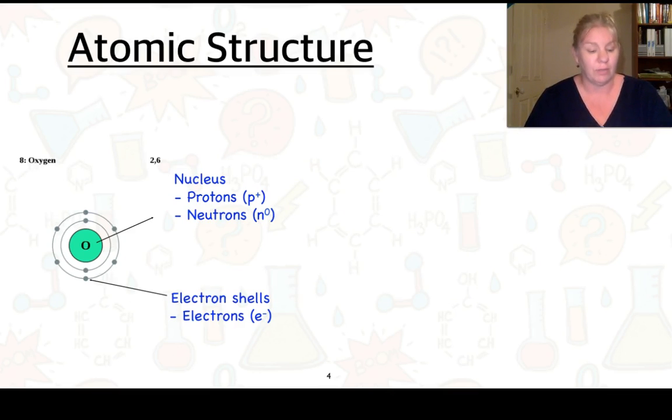Here's an example of an atomic structure of oxygen. Oxygen is element number 8, and it has 8 electrons. We have a nucleus, and in that nucleus we have protons and neutrons, and we have electron shells. You can see here that there appear to be 2 electron shells, 2 electrons in the first one, and 6 in the second. We'll go into more detail into that later.